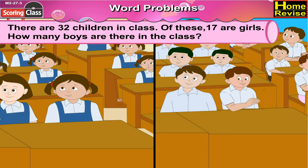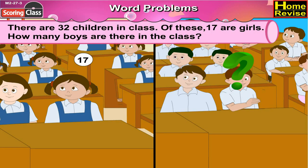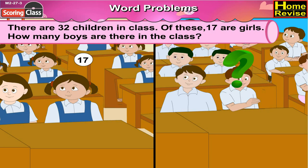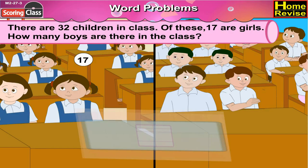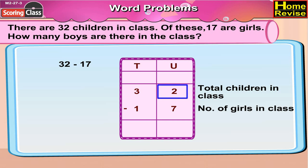There are 32 children in class. Of these, 17 are girls. How many boys are there in the class? The total number of students is 32 and girls are 17. Boys would be total students minus number of girls. So it is 32 minus 17, that is 3 tens 2 units minus 1 ten 7 units.